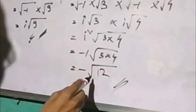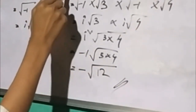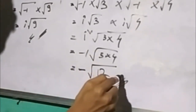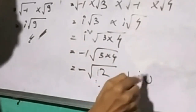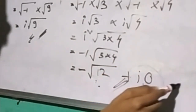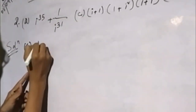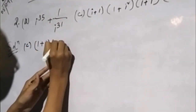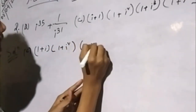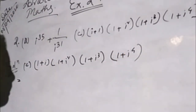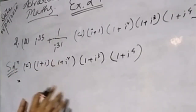c2 is not a complex number, because i is not a complex number. I will do c2. c2 is not a complex number: 1 plus i, whole into 1 plus i square, whole into 1 plus i cube, whole into 1 plus i to the power 4. I will do c2, so the power 4 is not a complex number.